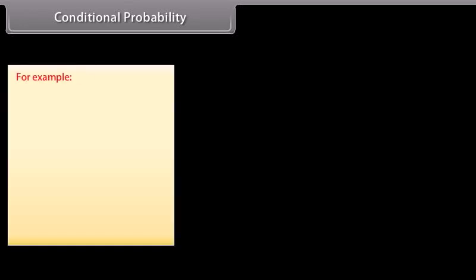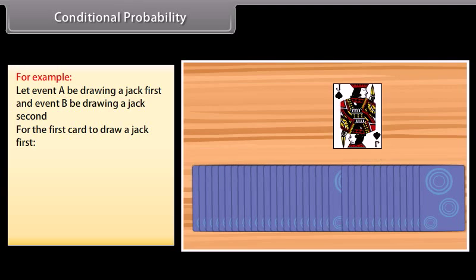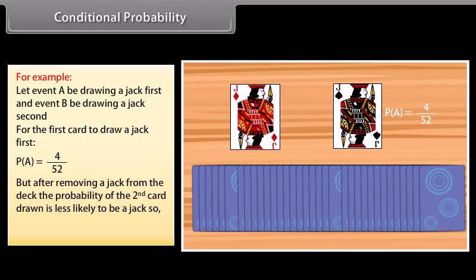For example, let event A be drawing a jack first and event B be drawing a jack second. For the first card, the probability of event A is equal to 4 by 52. But after removing a jack from the deck, the probability of the second card drawn being a jack is less likely. So the conditional probability of event B given event A is equal to 3 by 51.